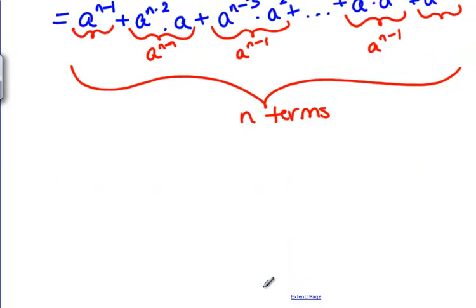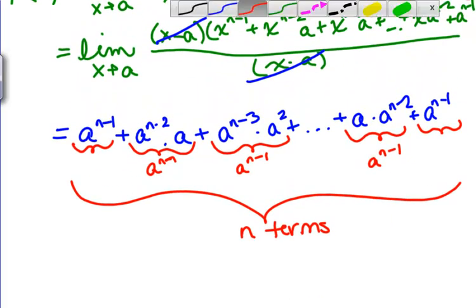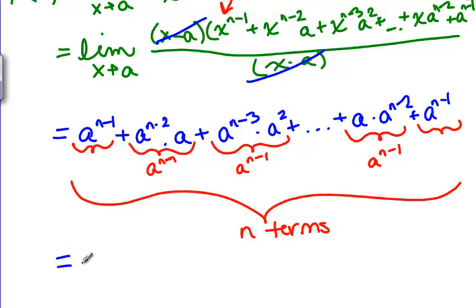So we can simplify this algebraic expression as N times A to the N minus 1. Because we're adding together A to the N minus 1 with itself N times.